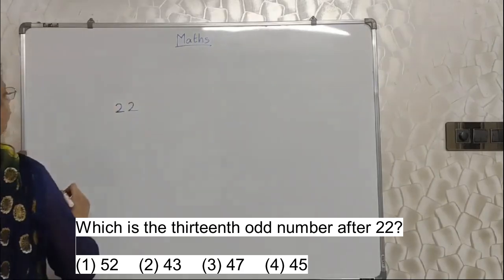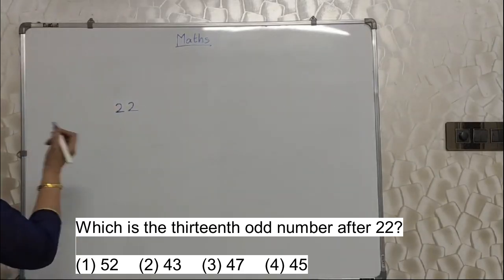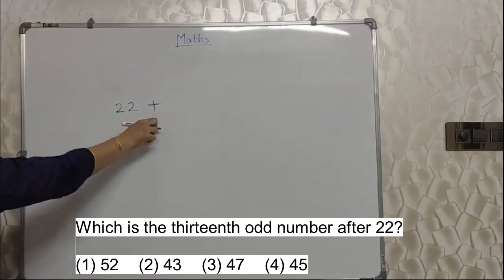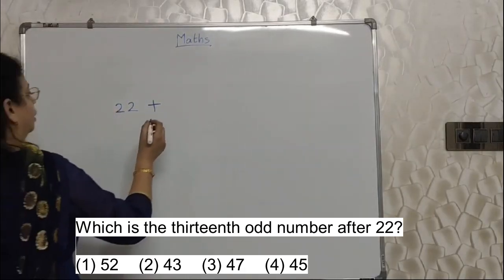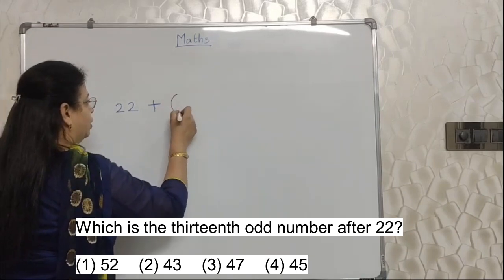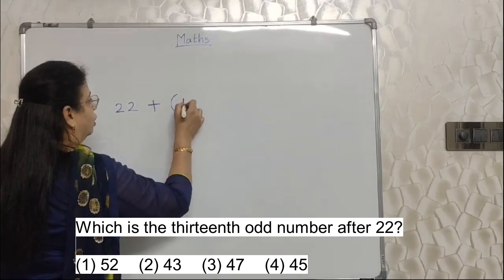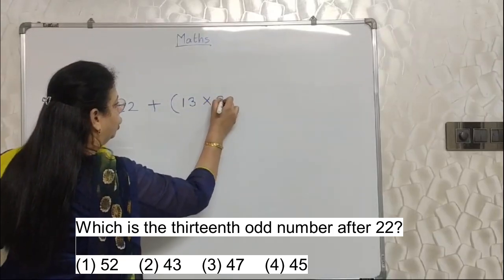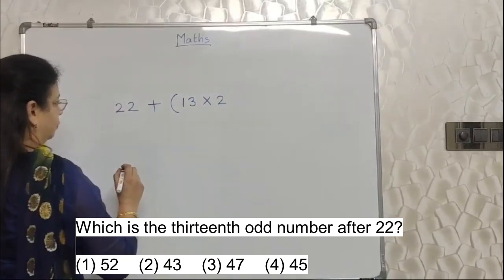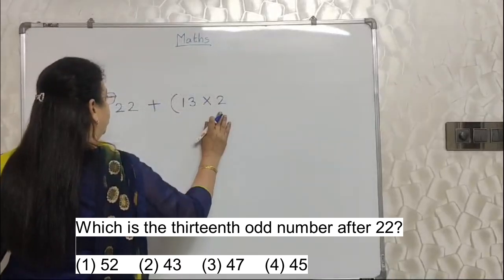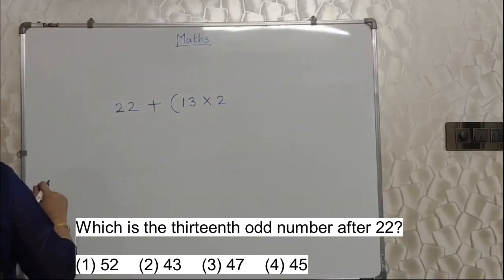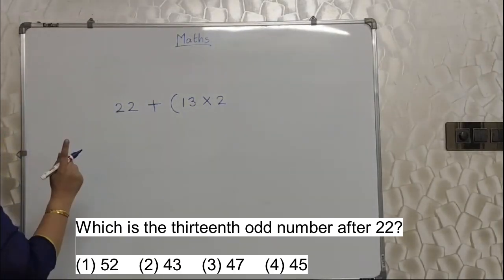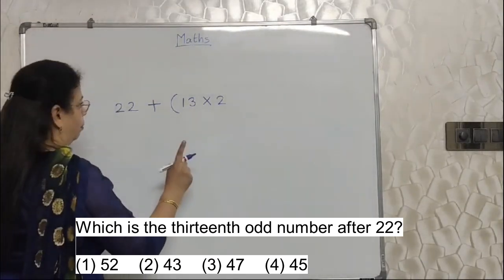They are telling us to find the 13th odd number after 22. So I have to write 22 first. After. So plus. If this would have been before, I would have written minus. After. So plus. Immediately bracket. 13th odd number. So 13 into 2 is in the bracket. This is a part of formula. And here you have to wait and ask yourself whether they are asking us to find out the odd number or even number. In this case it is odd number.